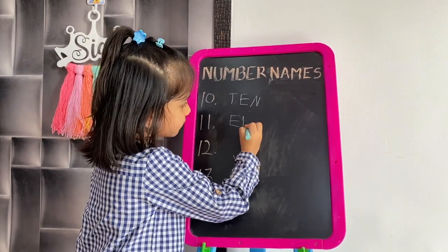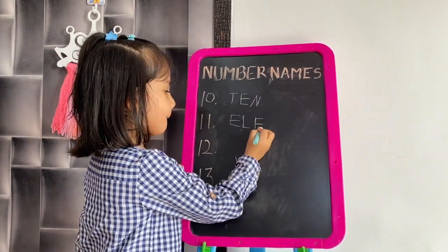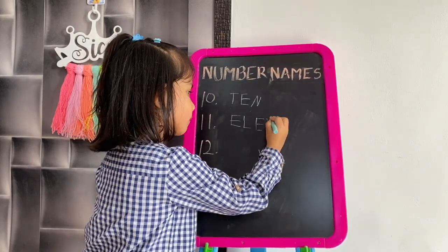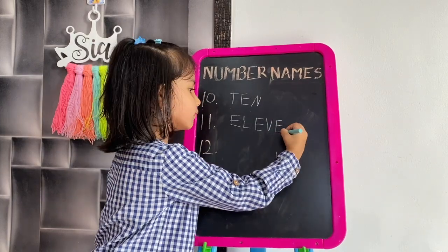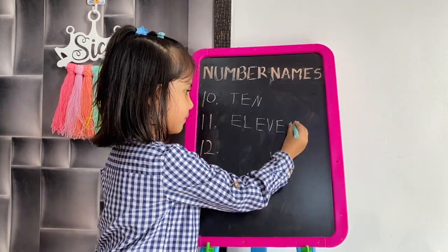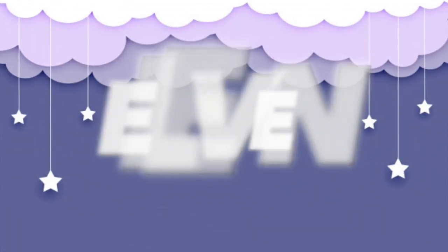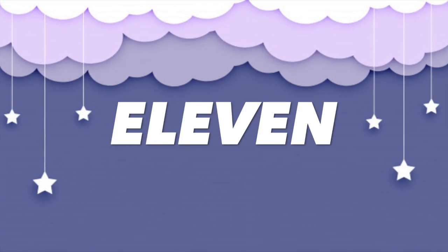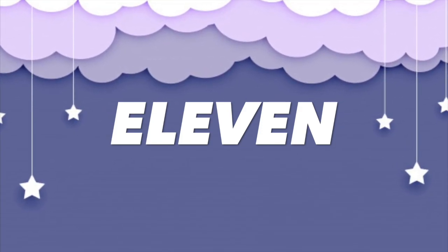Now I will write 11. E, L, E, V, E, N. 11. E, L, E, V, E, N. 11.